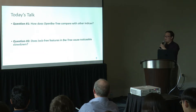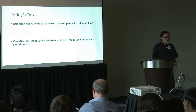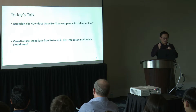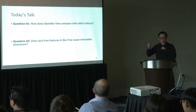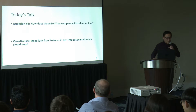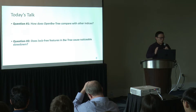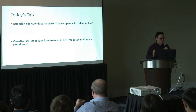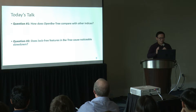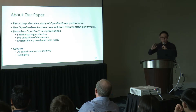Two major questions for today's talk are as follows. Question one: how does OpenBWTree compare with other indexes? As database designers, it is our responsibility to figure out how an index performs compared with others, and make choices and tradeoffs accordingly. Second question: does lock-free features in the BW Tree cause noticeable slowdown? This is important because in future designs of lock-free data structures, we want information about different tradeoffs and overheads of lock-free features so we can apply them in a smart way.